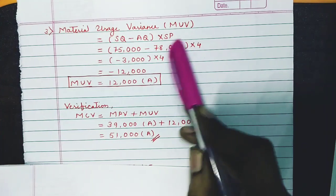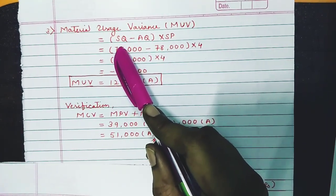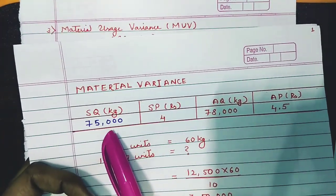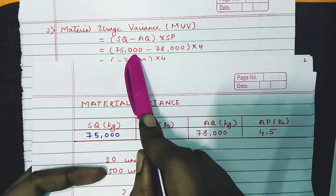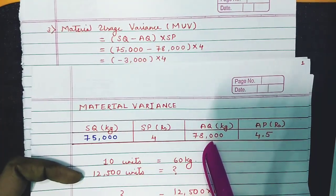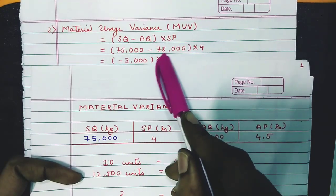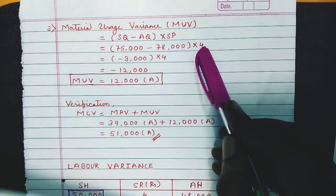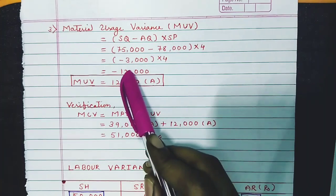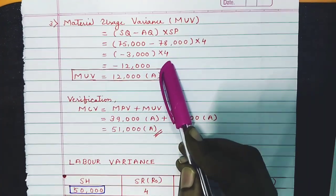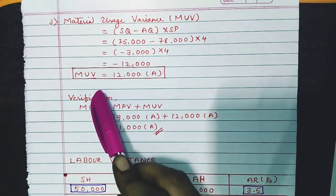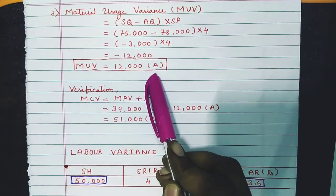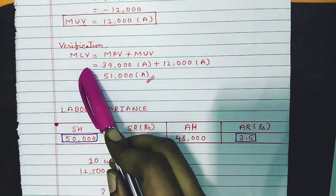Material Usage Variance (MUV) formula: (Standard Quantity − Actual Quantity) × Standard Price. Standard quantity is 75,000, actual quantity is 78,000, standard price is 4. So: (75,000 − 78,000) × 4 = −3,000 × 4 = −12,000. Therefore MUV = 12,000 Adverse.